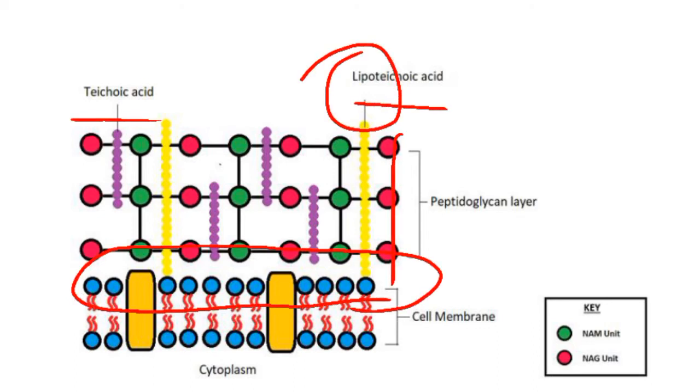While Teichoic Acids are anchored to the muramic acid of peptidoglycan, meaning they do not bind to the plasma membrane. They are only anchoring to the peptidoglycan.